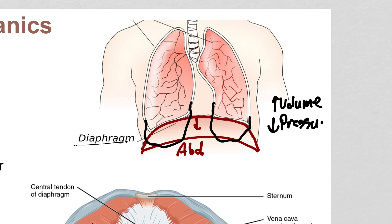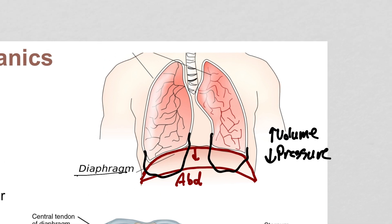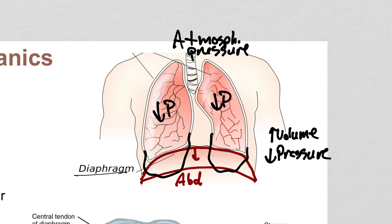Since volume and pressure have an inverse relationship, when lung volume goes up, pressure goes down. The pressure outside the lungs — atmospheric pressure — doesn't change breath to breath. So if lung pressure drops, we now have a gradient: relatively high pressure outside. Just like blood flows from high to low pressure, air flows from high to low pressure, drawing air into the lungs.